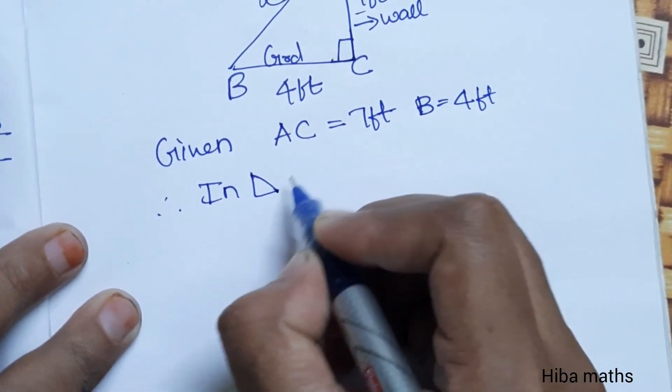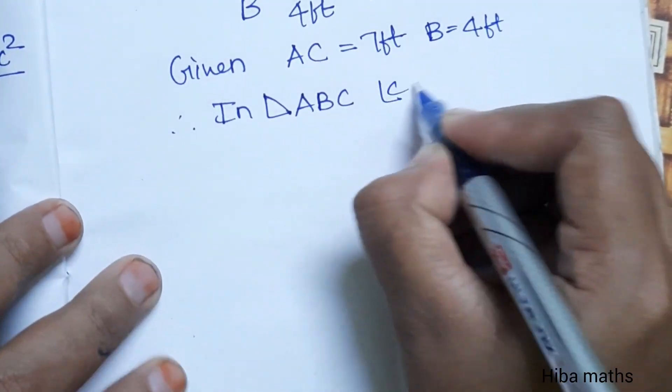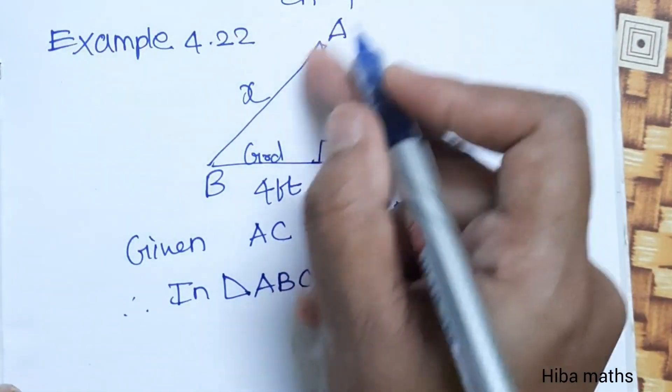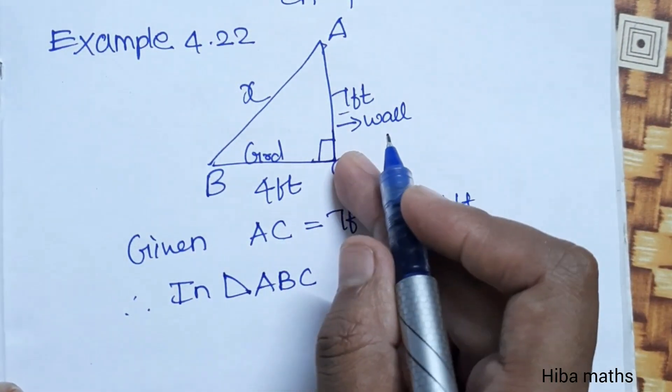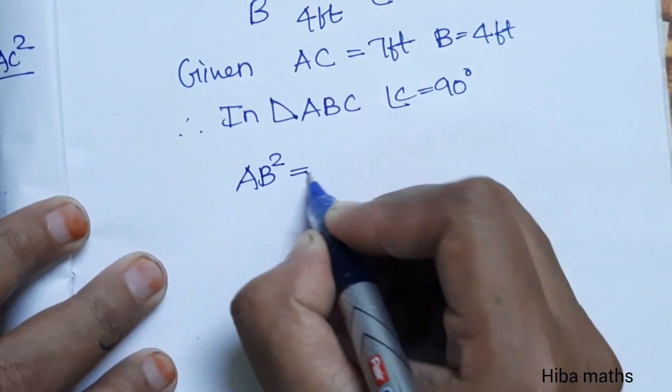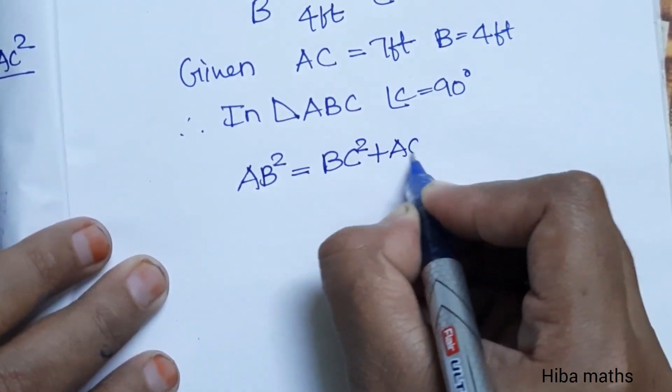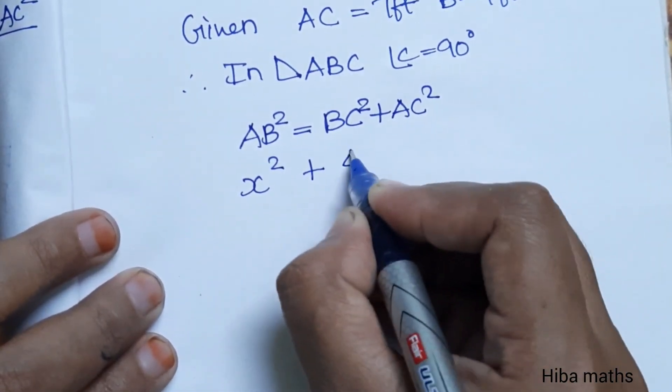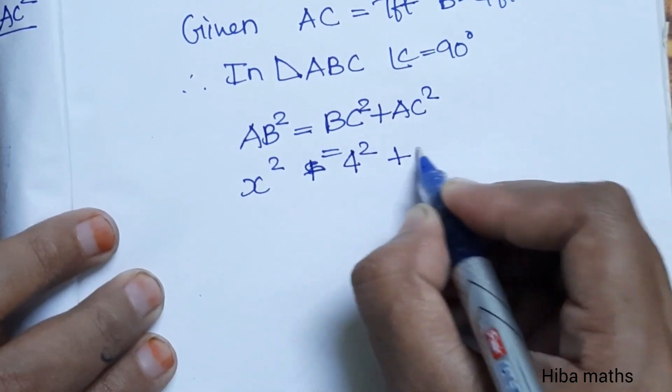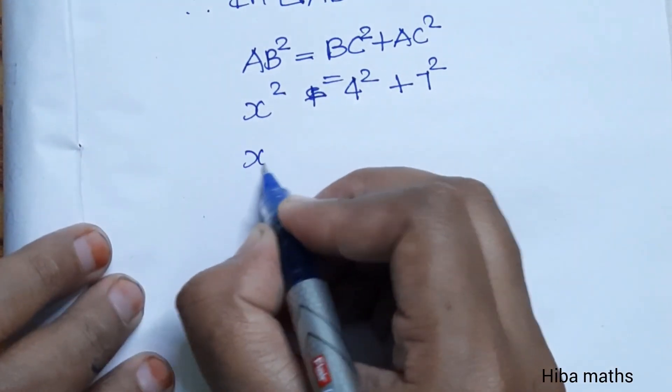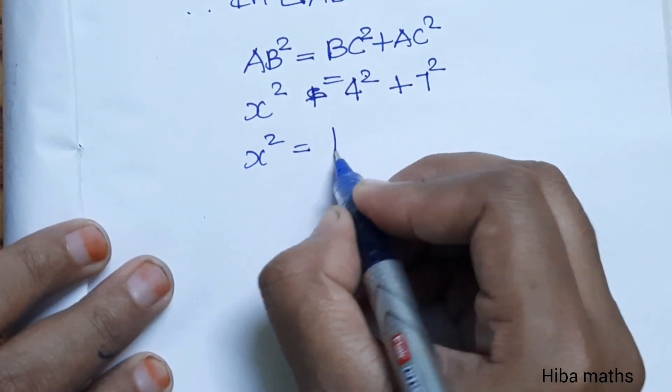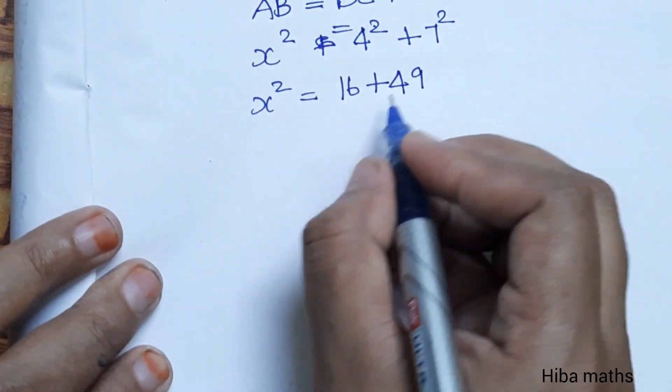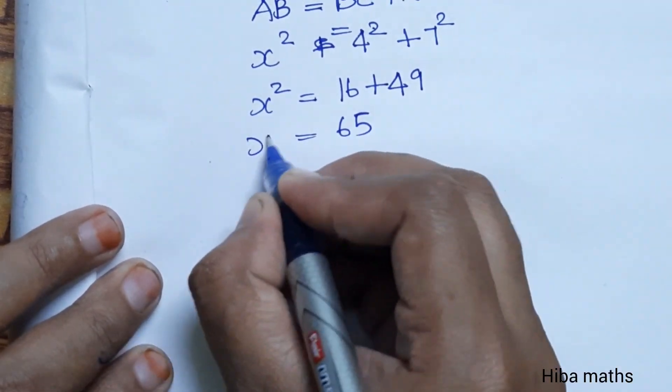In right angle triangle ABC, where angle C equals 90 degrees, by Pythagoras theorem: AB squared equals AC squared plus BC squared. So x squared equals 7 squared plus 4 squared, which is 49 plus 16, equals 65.